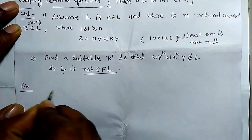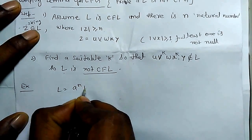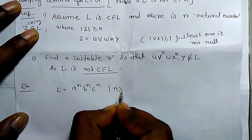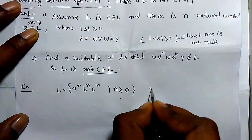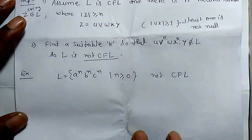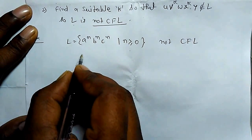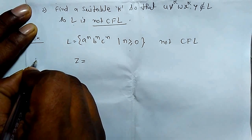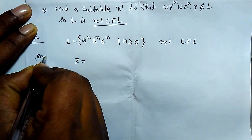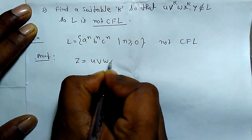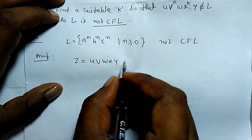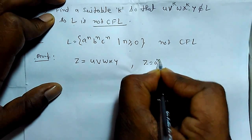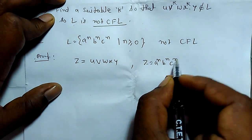Let's take the example L = {a^n b^n c^n | n ≥ 0} and prove it is not a context-free language. For that, let's take z = uvwxy for a particular natural number n, so z = a^n b^n c^n for a particular value of n.